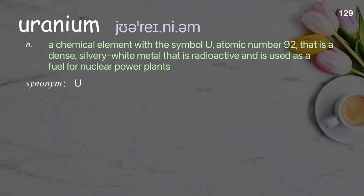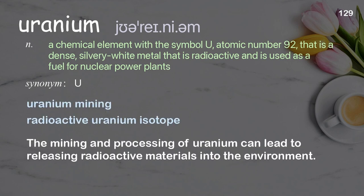Uranium: a chemical element with the symbol U, atomic number 92, that is a dense, silvery white metal that is radioactive and is used as a fuel for nuclear power plants. Examples: uranium mining, radioactive uranium isotope. The mining and processing of uranium can lead to releasing radioactive materials into the environment.